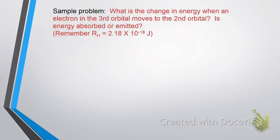So, let's do a sample problem. What is the change in energy when an electron in the third energy orbital moves to the second energy level? Is energy being absorbed, or is it being emitted? Now, remember, the RH here is 2.18 times 10 to the minus 18 joules. You may want to pause the video now and try to work this out on your own.